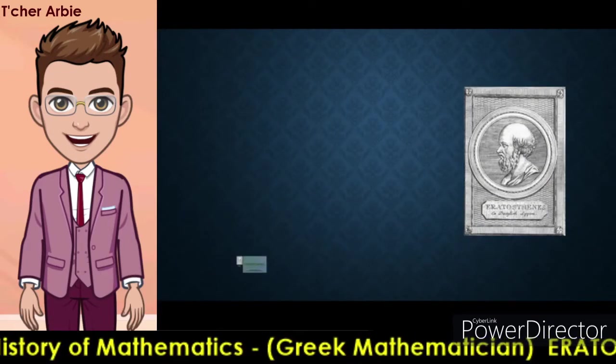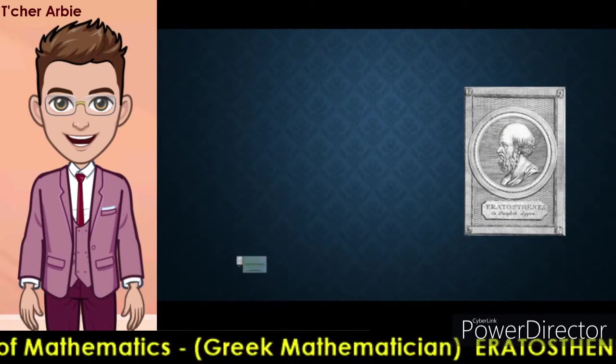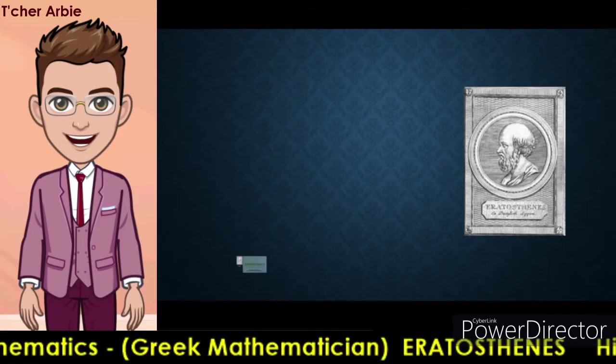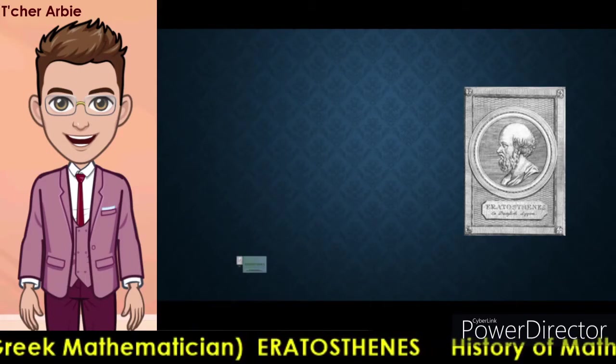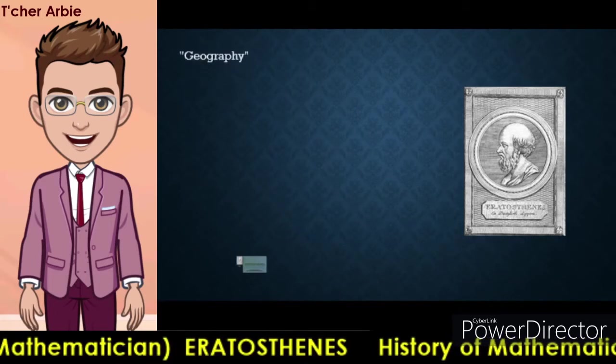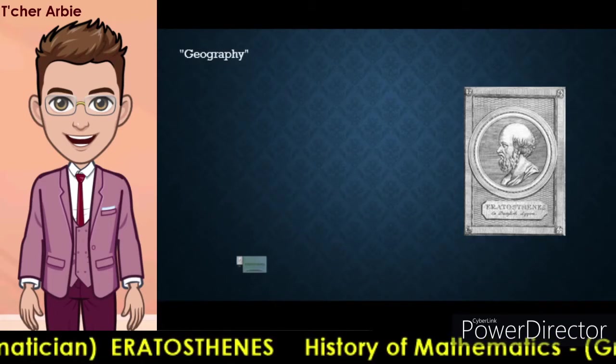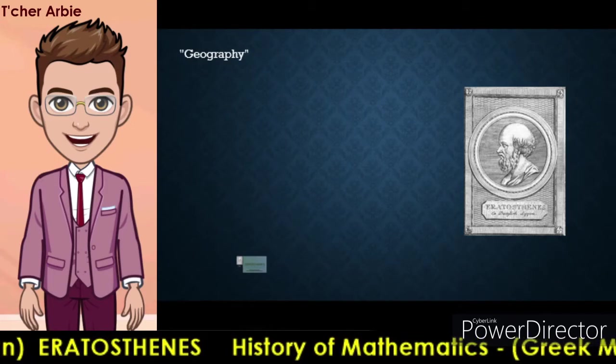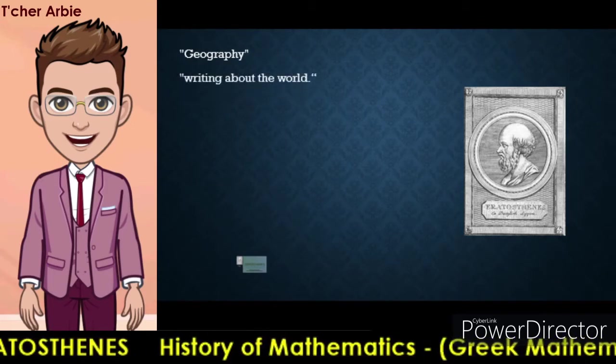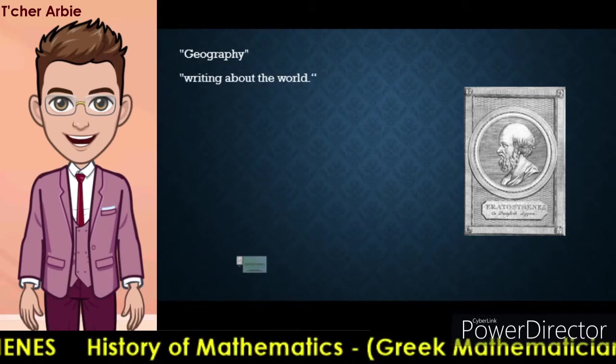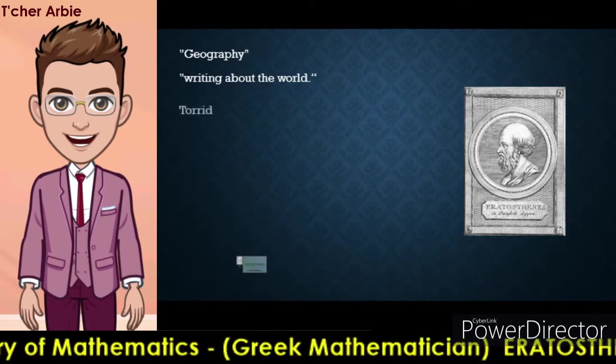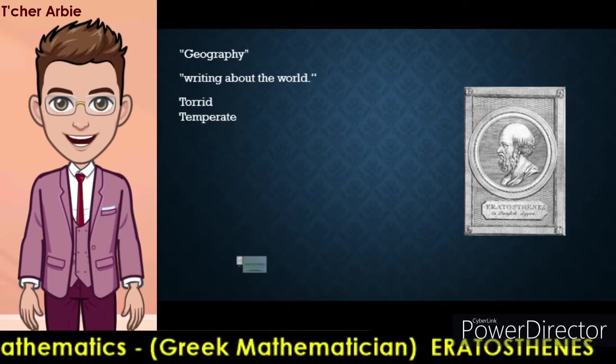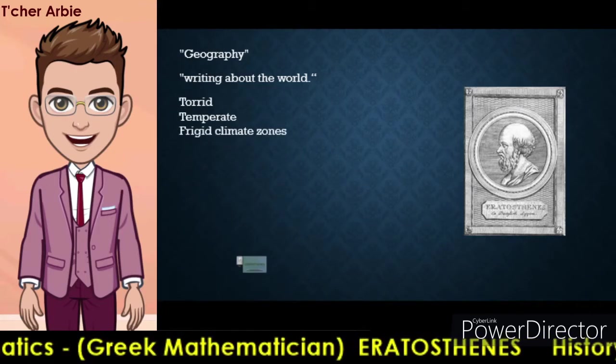In the field of geography, while serving as the head librarian and scholar at the library of Alexandria, Eratosthenes wrote a comprehensive treatise about the world which he called geography. This was the first use of the word, which in Greek means writing about the world.